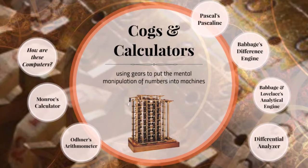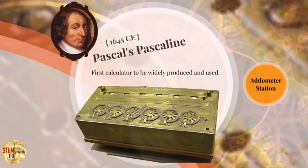We move now to the second era of pre-digital computing, the era I call cogs and calculators, where we use gears to put the mental manipulation of numbers into machines. One of the very earliest for this was called Pascal's Pascaline. Blaise Pascal invented it. It was the first calculator, mechanical calculator, to be widely produced and used. Let's take a look at how it worked.